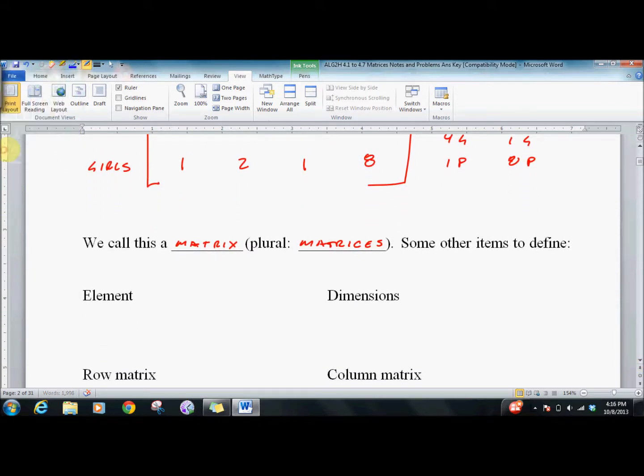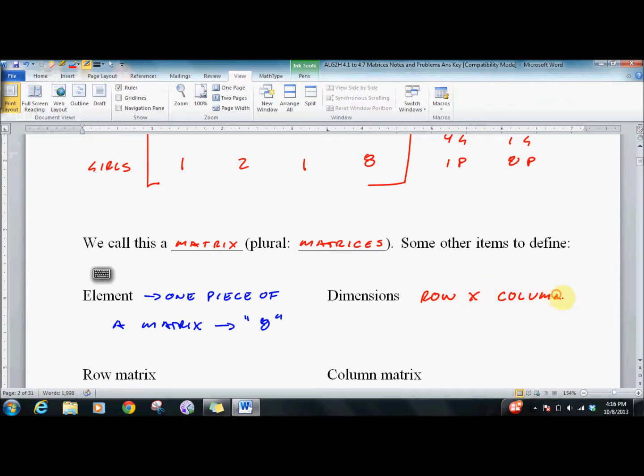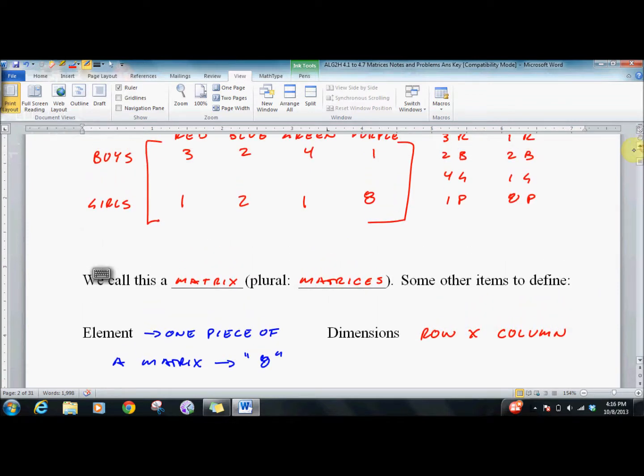Some definitions. What's an element? One piece of the matrix. So for example, the number 8 up here is an element. The dimensions - we go row by columns. So again, for example, up here we have a 2 by 4 matrix: two rows, four columns.